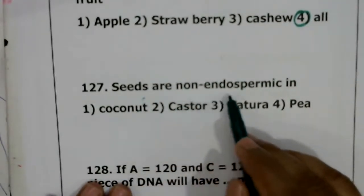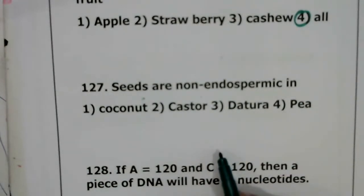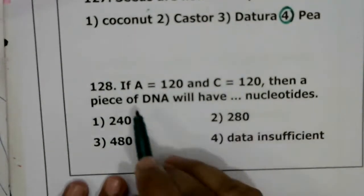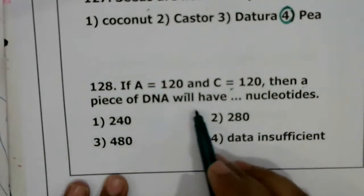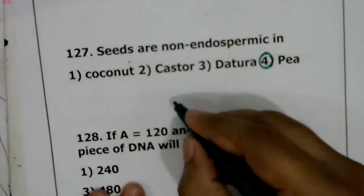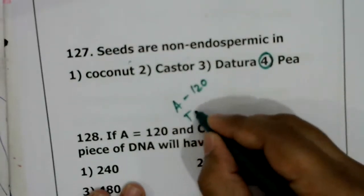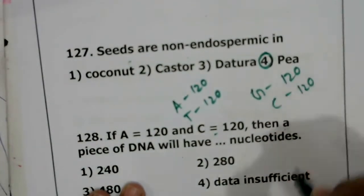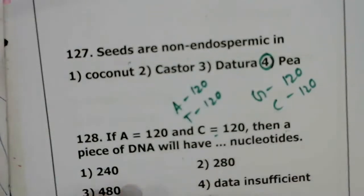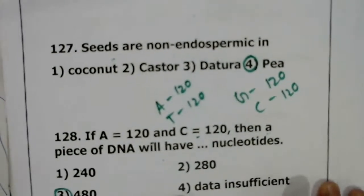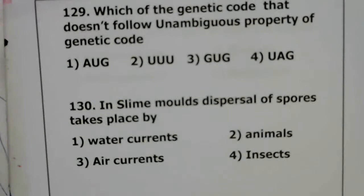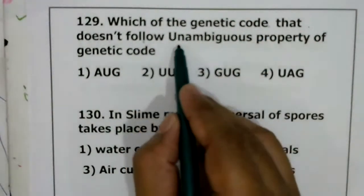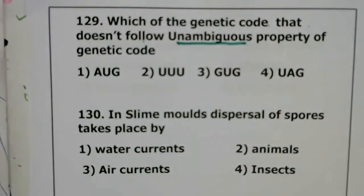Question 127: seeds are commonly non-endospermic in pea plants. If adenine is 120 and cytosine is 120 in a piece of DNA, then thymine will also be 120 and guanine will be 120. Adding all gives 480 nucleotides total. Correct answer for question 127 is 480.